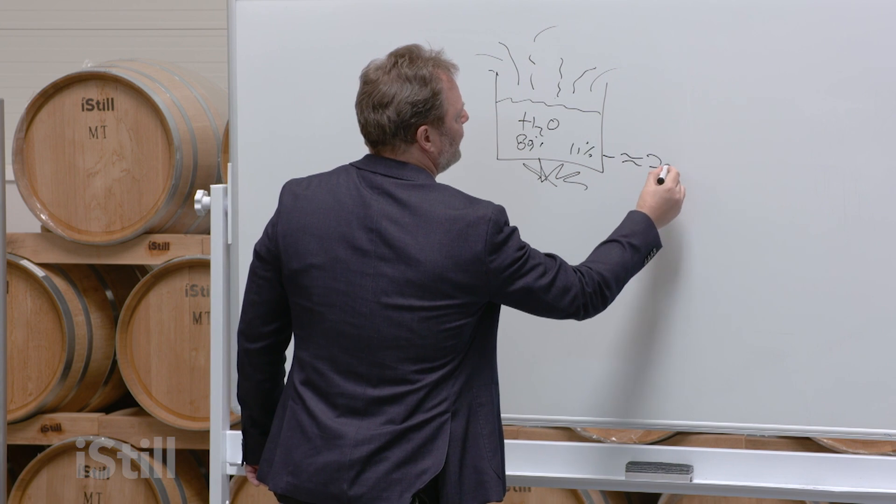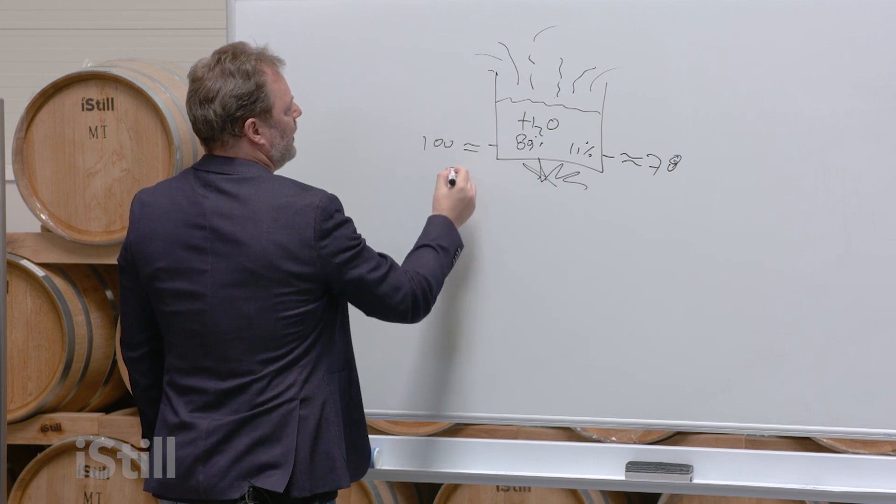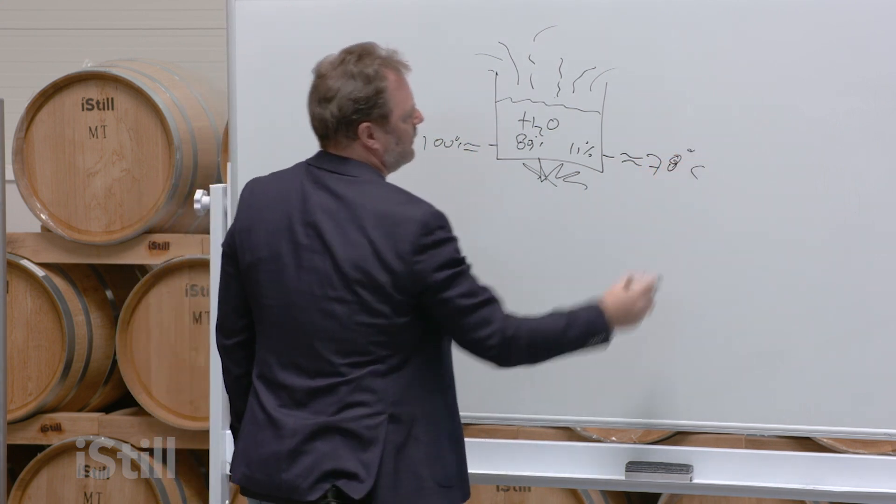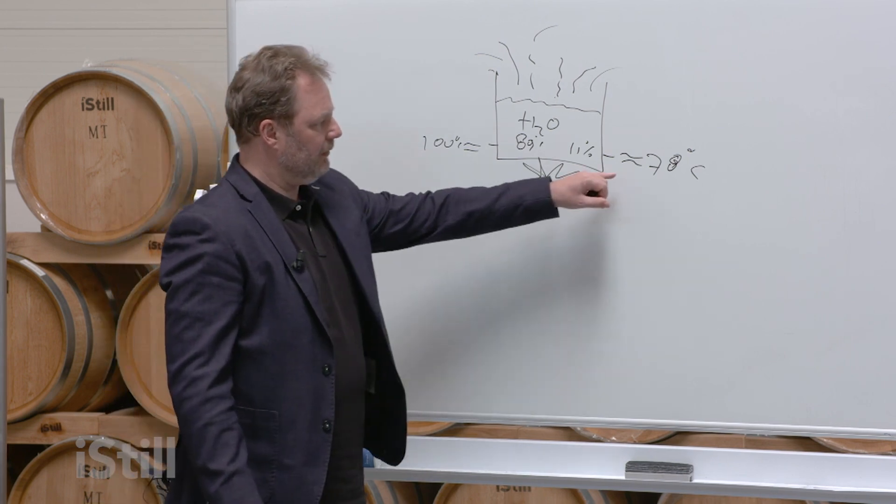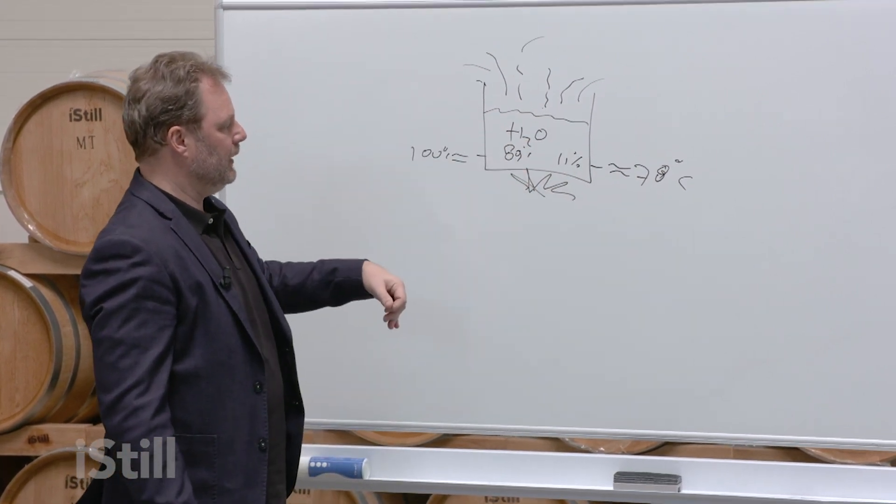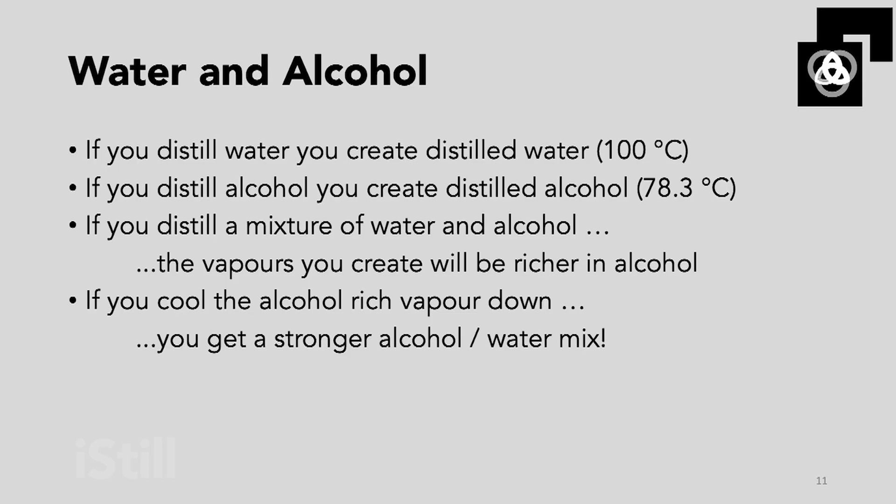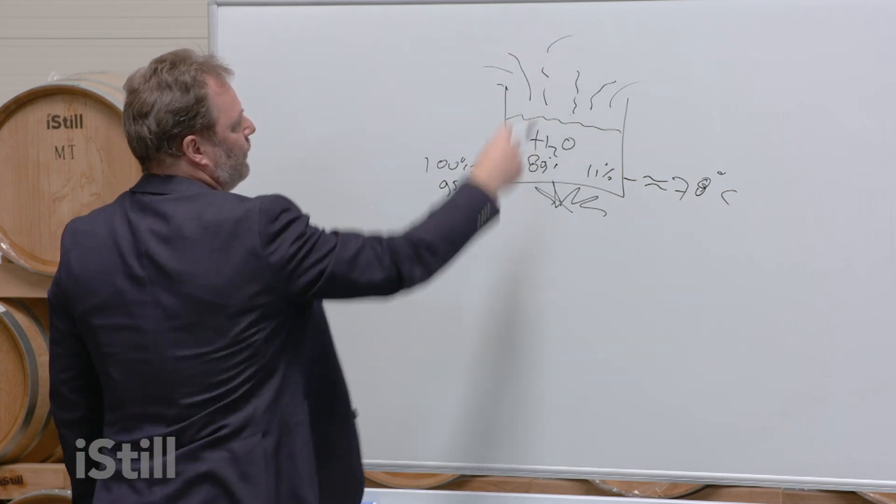Now what I want you to understand is that the alcohol boiling point is around 78 degrees Celsius and the water boiling point is around 100 degrees Celsius. That basically means that the alcohol molecules in the wine that we are heating up, that we're boiling, boil earlier than the water molecules. But since it's a mixture, everything will boil at the same time.